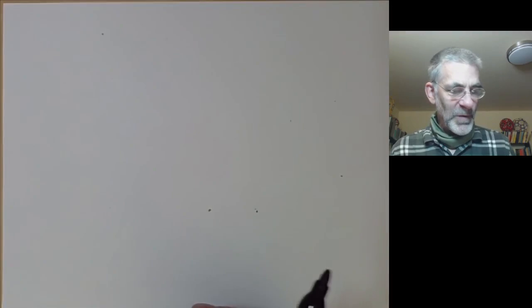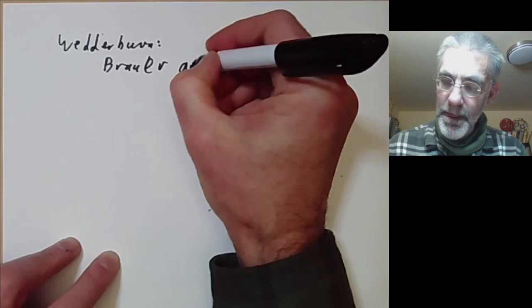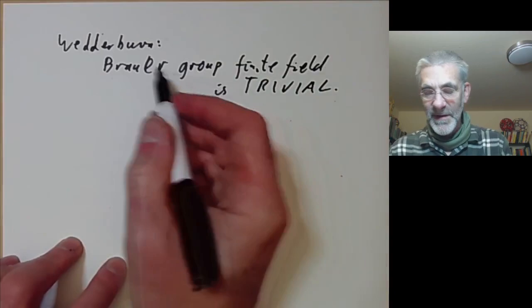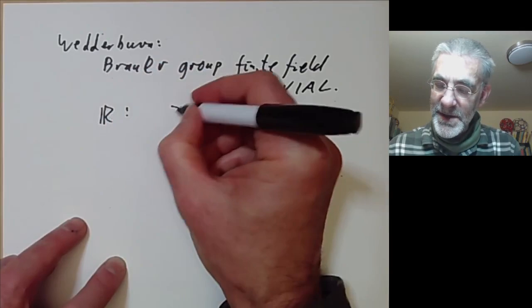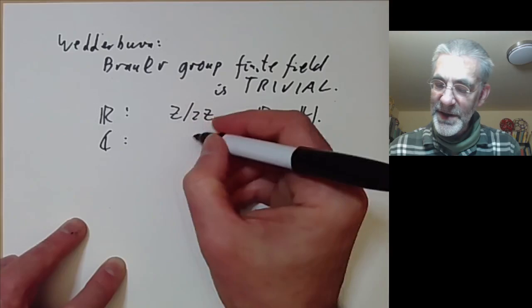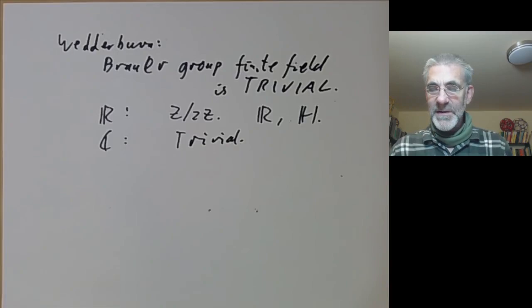Anyway, Brouwer showed that these form a group, and this group turns out to be quite important in class field theory. So Wedderburn proved that the Brouwer group of a finite field is trivial. That's just saying that all division algebras are fields. And the Brouwer group of the reals is a cyclic group of order two because Hurwitz proved the only central division algebras over the reals are the real numbers and the quaternions. Over the complex numbers, the Brouwer group is trivial because the complex numbers are algebraically closed, and it's quite easy to show that there are no division algebras over that.